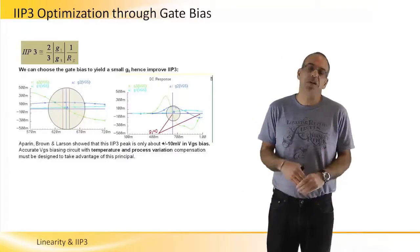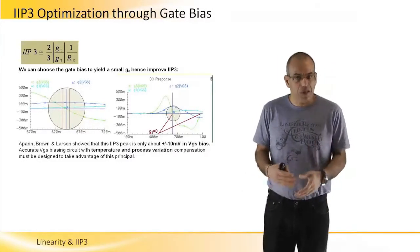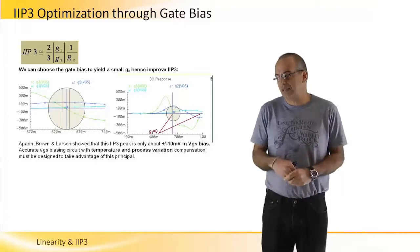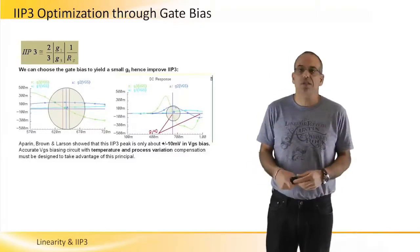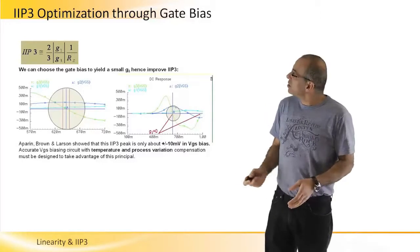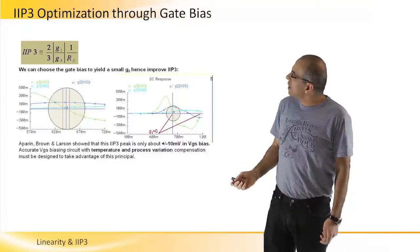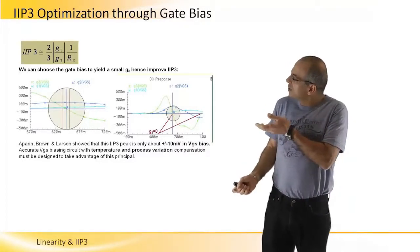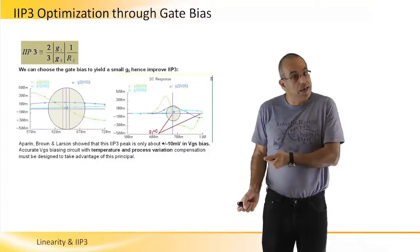So this is a way to improve linearity in low frequencies. In high frequencies, there are some complications that are discussed in the paper, but are not fully proven at higher frequencies. So gate biasing is really a good way to improve linearity in LNA, but we will discuss other ways in the next slides.